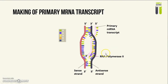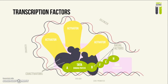When transcription is finished, the DNA strand and the RNA polymerase 2 enzyme separate from the mRNA strand, leaving a primary mRNA transcript. Although transcription seems simple, there has to be something that controls it — these are called transcription factors.